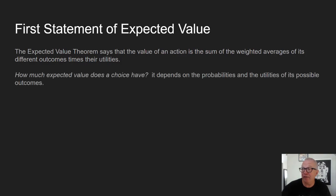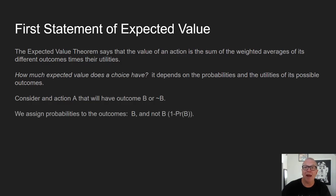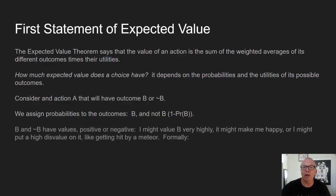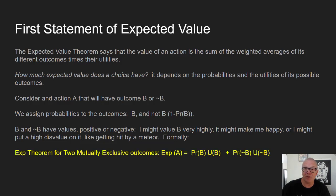So our expected value theorem says the value of an action is the sum of the weighted averages of its different outcomes times their utilities. How much expected value does a choice have? It depends on the probabilities for the outcomes and the utilities of the possible outcomes. More formally, the expected value theorem for two mutually exclusive outcomes is: EXP(A) = P(B) × U(B) + P(not-B) × U(not-B).